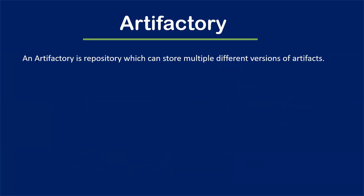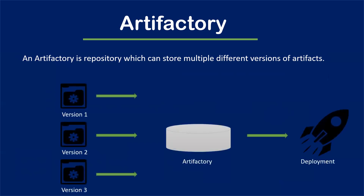Now let's discuss about artifactory. An artifactory is a repository where we can store multiple different versions of an artifact. In all industries, before deploying, they store artifacts in some repository and then deploy from there. For example, version one of the code gets stored in artifactory before deploying it to a virtual machine or application server. If a new feature updates to version two, that also gets stored in artifactory first before deployment.